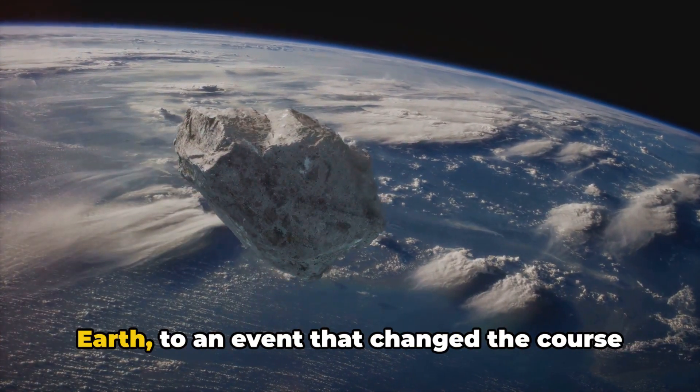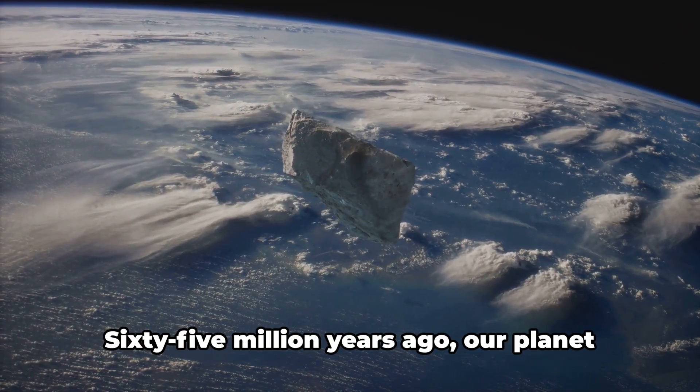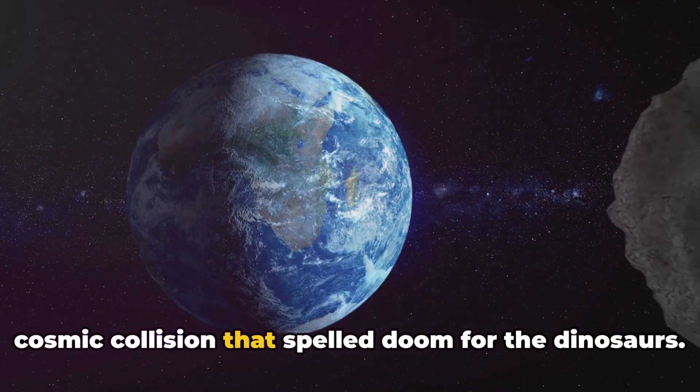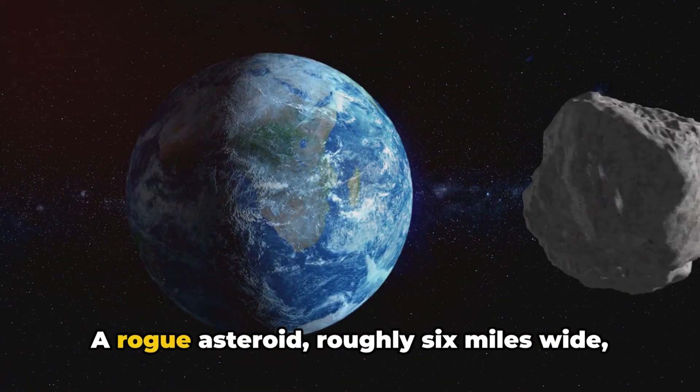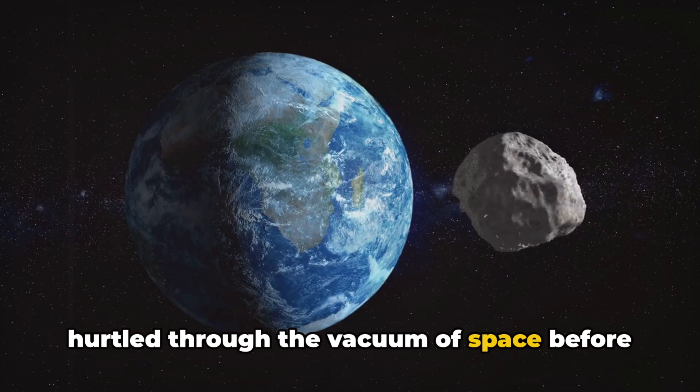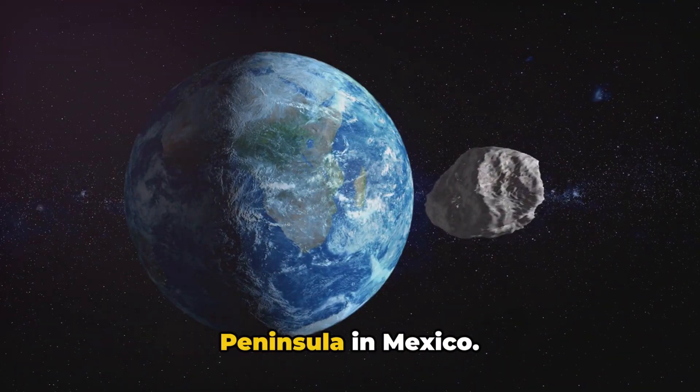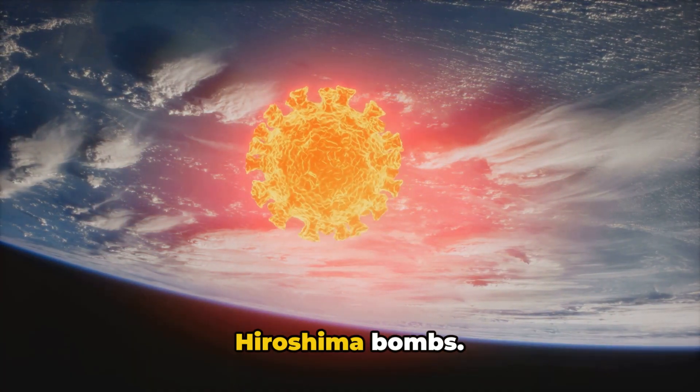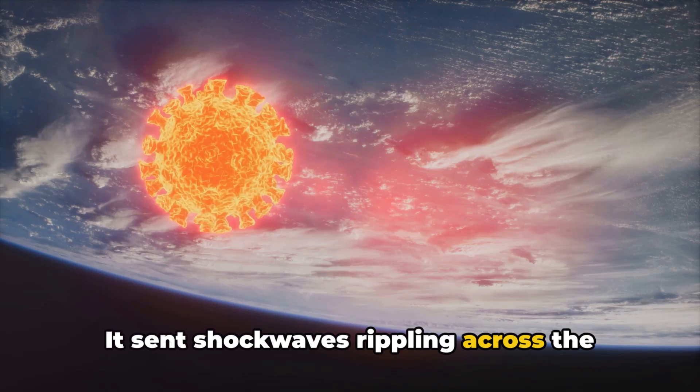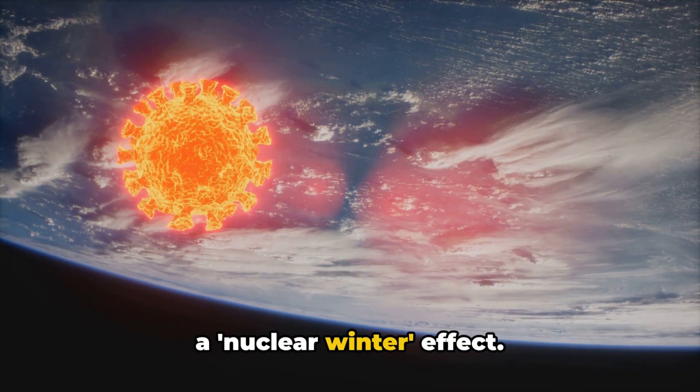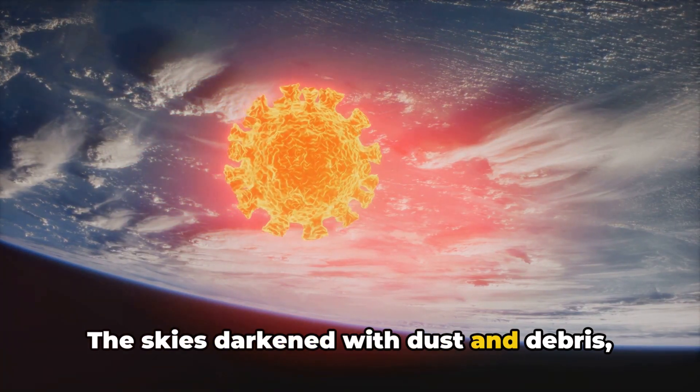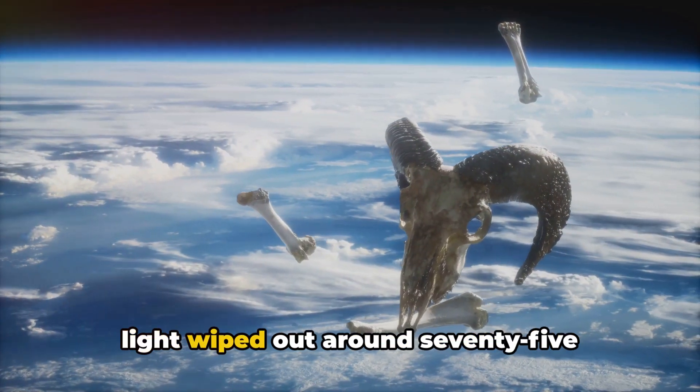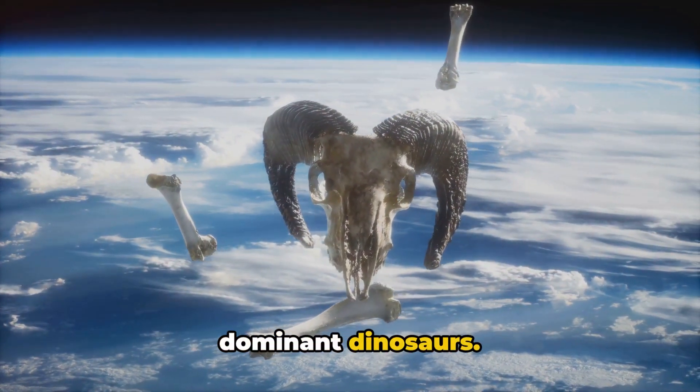Collision number three takes us back to Earth, to an event that changed the course of life. 65 million years ago, our planet bore witness to a cataclysmic event, a cosmic collision that spelled doom for the dinosaurs. A rogue asteroid, roughly six miles wide, hurtled through the vacuum of space, before slamming into what is now the Yucatan Peninsula in Mexico. The sheer force of this impact was staggering, equivalent to a billion Hiroshima bombs. It sent shockwaves rippling across the globe, triggering tsunamis, wildfires and a nuclear winter effect. The skies darkened with dust and debris, blocking sunlight for months, if not years. This drastic drop in temperature and light wiped out around 75% of all species, including the dominant dinosaurs.